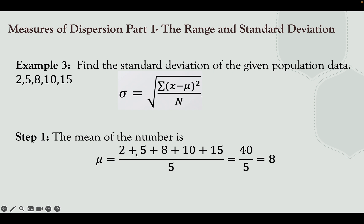Find the sum of the data sets: 2 + 5 + 8 + 10 + 15 = 40. Divided by 5 data values, we get a mean of 8.